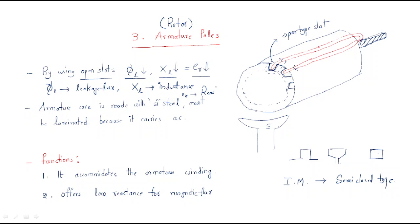Whenever the leakage flux is less and the reactance voltage is less, it provides better commutation. Better commutation is achieved when the reactance voltage is low.